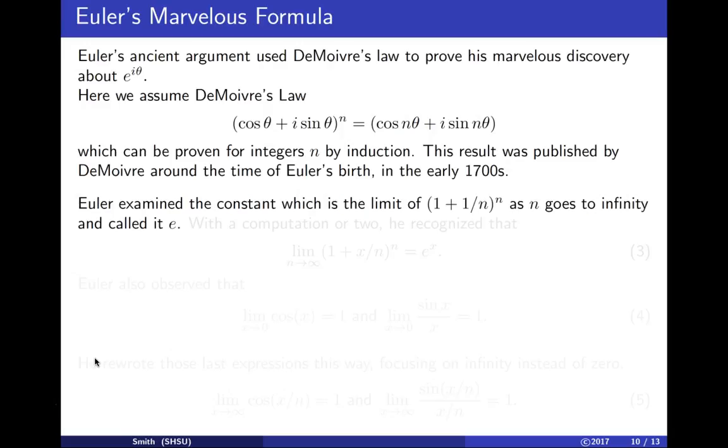We now call this constant e. It's lim(n→∞) (1 + 1/n)^n. Euler recognized that lim(n→∞) (1 + x/n)^n = e^x. So the exponential function is the result of this limit.